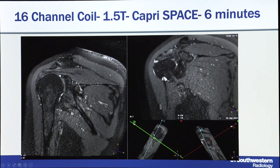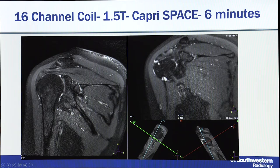The same approach is possible for the shoulder, and it's now possible at 1.5 tesla also. On one of our newer Siemens Solar scanners, the Caipirinha SPACE is acquired in about 6 minutes. You can reconstruct in any plane — here it's reconstructed along the axis of the scapula so you can see the supraspinatus coming down and not attaching at the greater tuberosity: a full thickness tear.